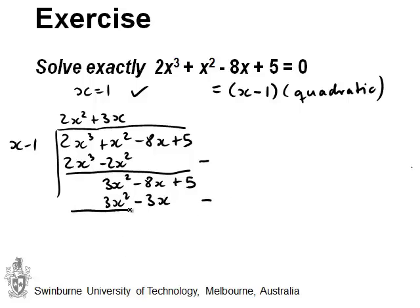We subtract. And what we get is 3x squared minus 3x squared disappears. Negative 8x plus 3x will give us negative 5x. And we take down the 5 again.